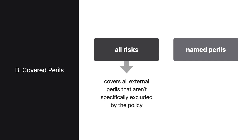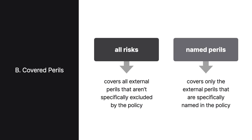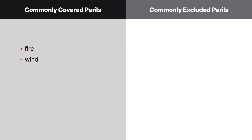An All-Risks policy covers all external perils that aren't specifically excluded by the policy. A Named Perils policy covers only the external perils that are specifically named in the policy. Both options typically end up covering and excluding the same general perils. Commonly covered perils include fire, wind, lightning, rain, and strikes from external objects.